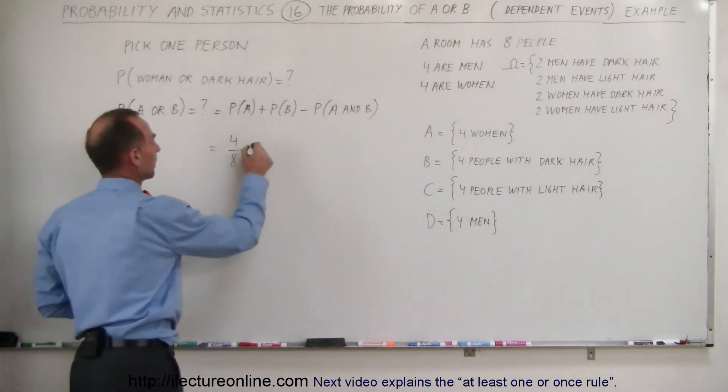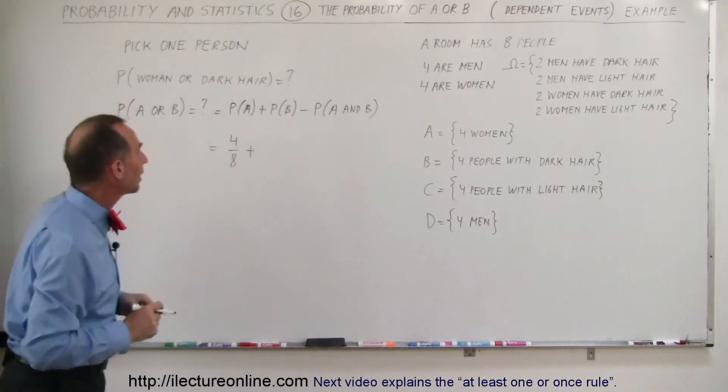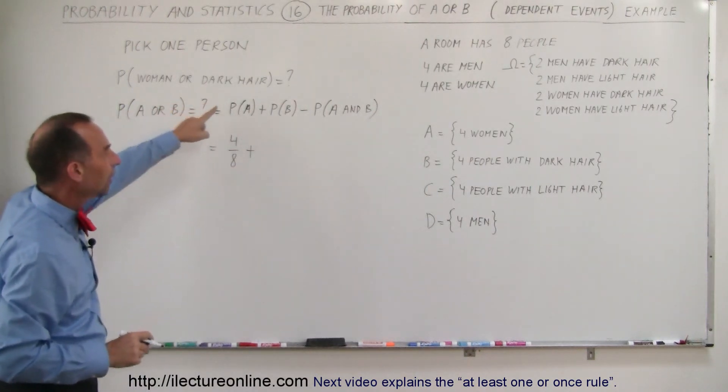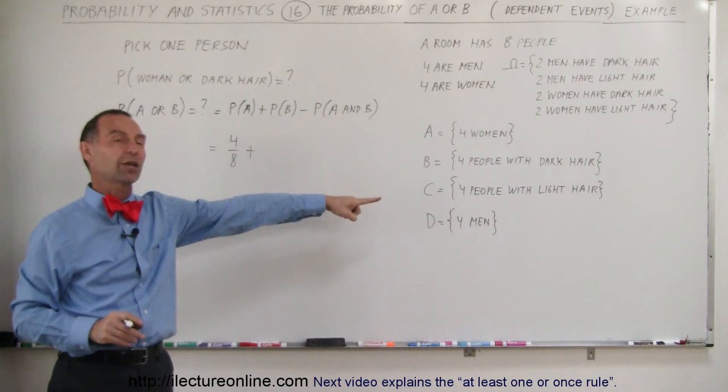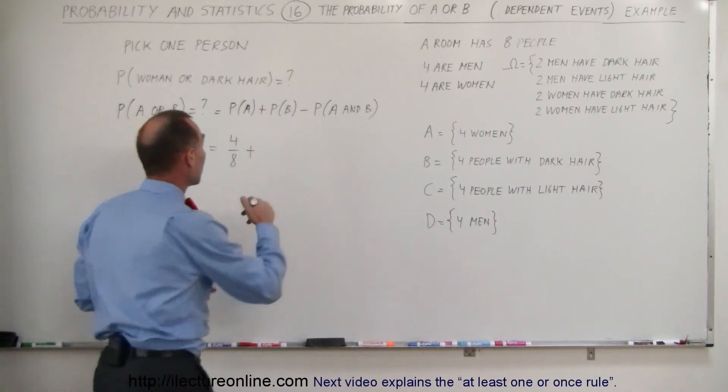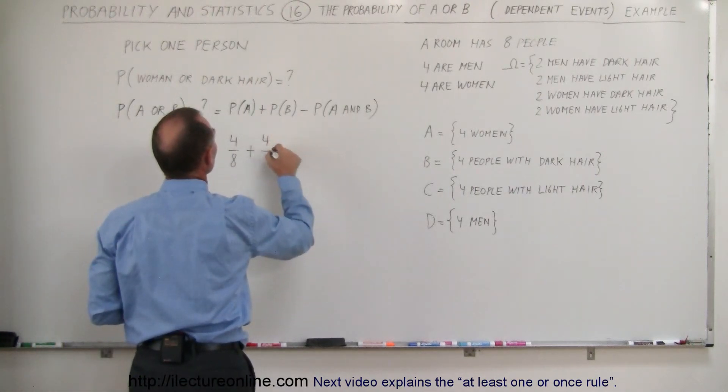Plus B. We're looking for someone with dark hair and there are four people that have dark hair, so the probability that someone with dark hair will come out is four divided by eight.